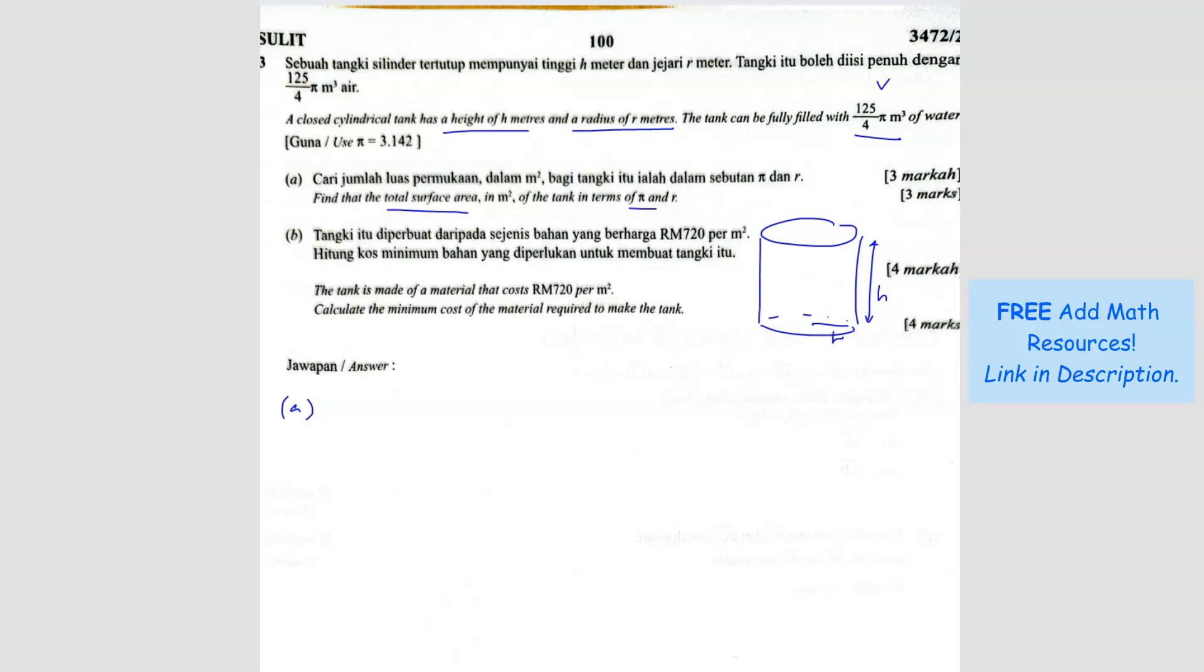We want to find the total surface area, so we have to use the circles. Pi r squared, and since we have two circles, it will be 2 pi r squared, then we have to find the curved surface. Notice that there is no h here, it's only in terms of pi and r. So we have to find a way to substitute the h out. That's why we have to use the volume. Volume equals pi r squared h for a cylinder. The volume is 125 over 4 pi equals pi r squared h. We're going to make h the subject so we can substitute. Cancel pi, so h equals 125 over 4 r squared.